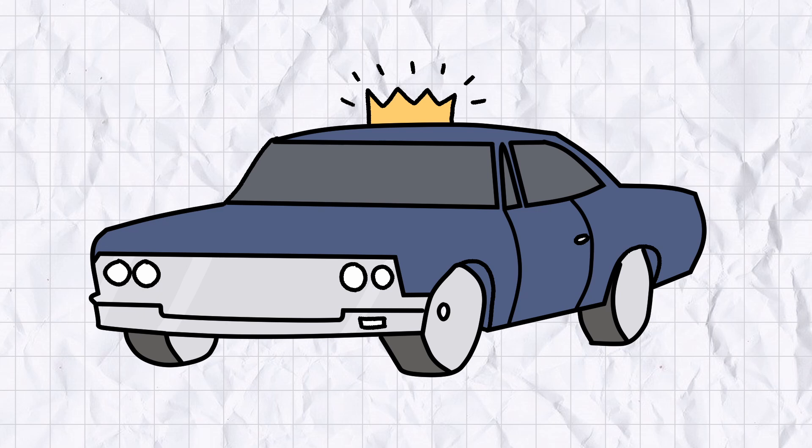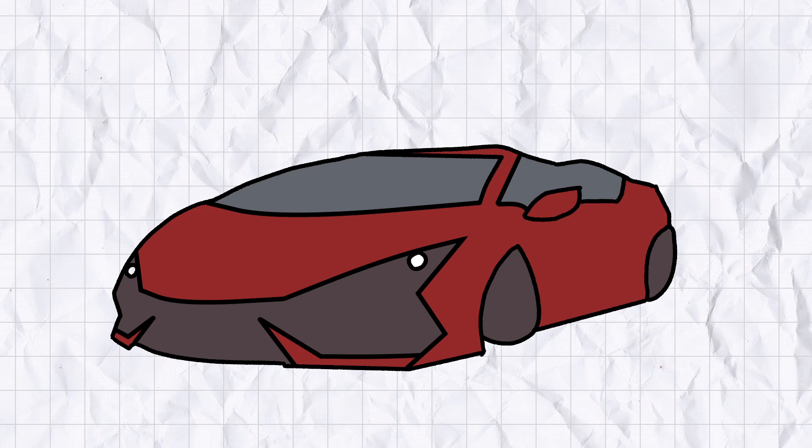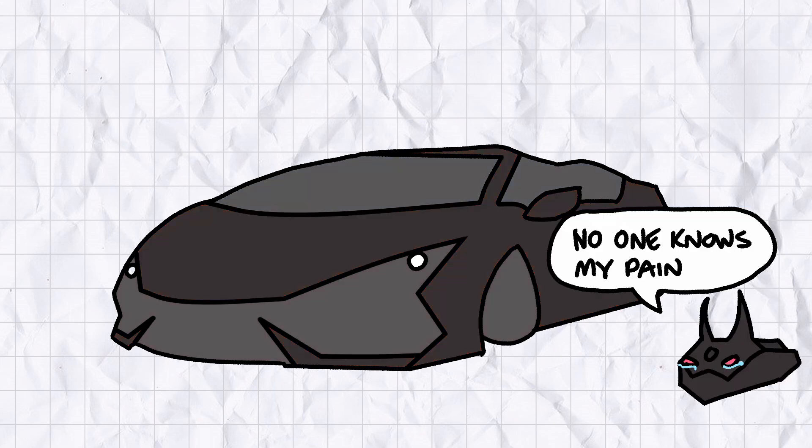Bumpers, rims, even door handles were drenched in chrome, but as time moved on and tastes changed, chunky chrome grilles fell out of fashion in favor of sleek modern designs, the sort of car Batman would drive if he was a gaming mouse with dead parents.